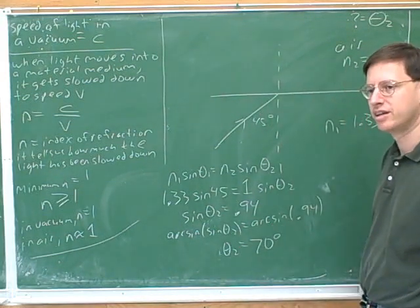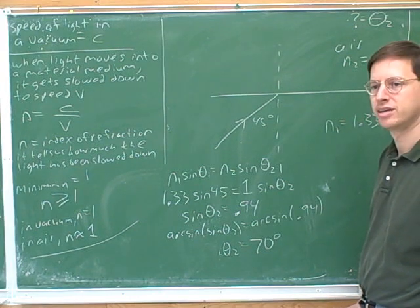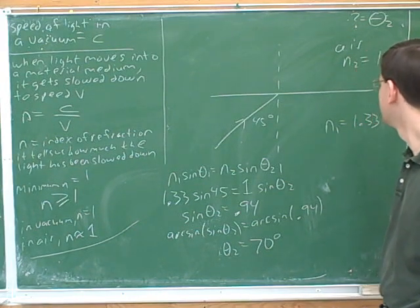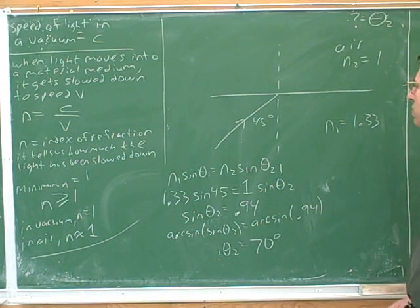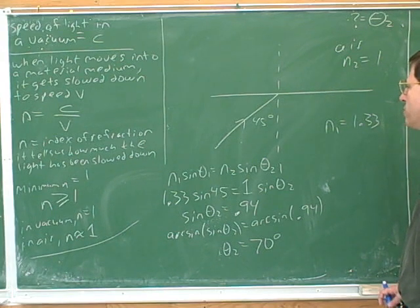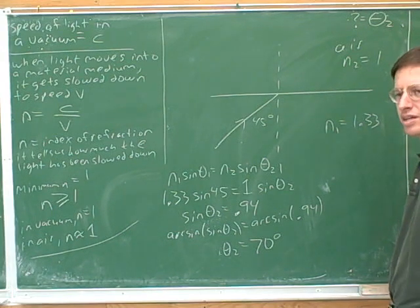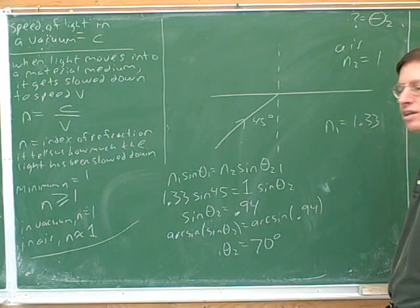So as you saw, we have to take the arc sine. I had it mixed up when there is a bigger n, n1. Let me talk you through that. So are we moving into, as we move from one medium to the other, is n getting bigger or smaller here? It's getting smaller.